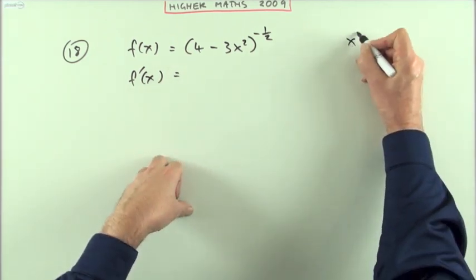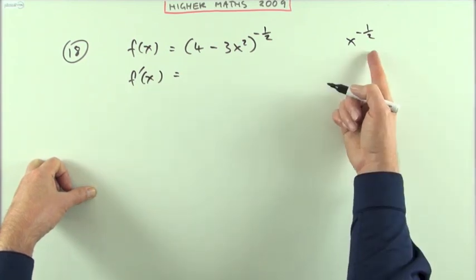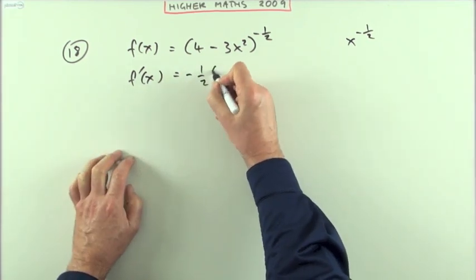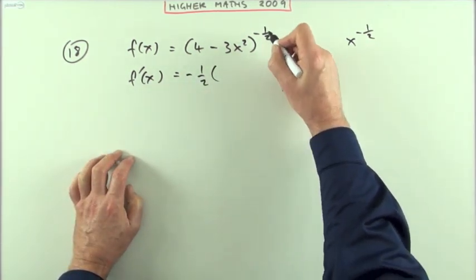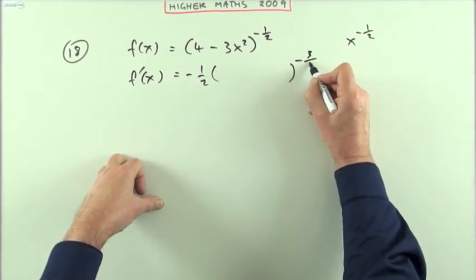If that had simply said x to the negative half that would be a straightforward function, just power negative a half, then you would have done multiply by the power, take one off the power, one off of negative a half means taking away another one which is another two halves which is negative three upon two.